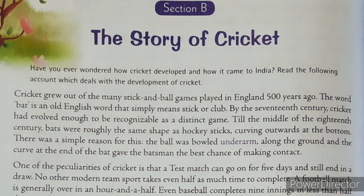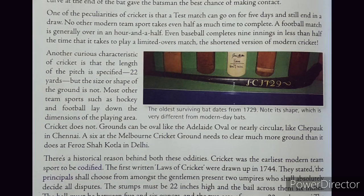The first oddity is about timing — a test match can go on for five days and still end in a draw. The second curiosity is about the length of the pitch: it is specified that it should be 22 yards, but the size or shape of the ground is not specified. In contrast, other team sports like hockey and football have laid down the dimensions of the playing area, but cricket has no such rule.